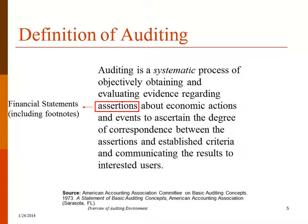Management makes these assertions about the economic actions and events that the company engaged in. So those assertions are what we see in the financial statements. They're making assertions about information that's contained in the financial statements, including footnotes. Remember, your footnotes are a part of your financial statements. And so auditors are auditing the financial statements about economic events to determine whether or not the assertions that management makes agree with what's recorded in the financial statements.